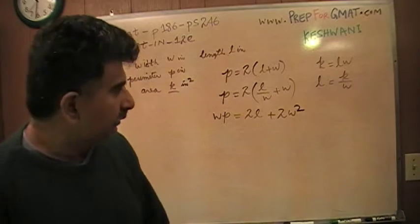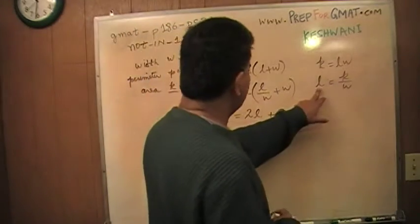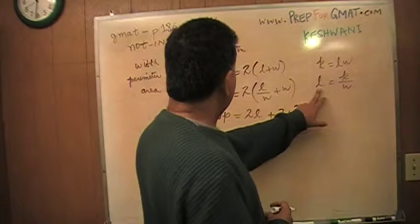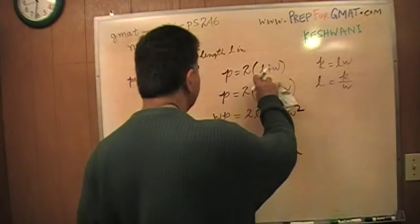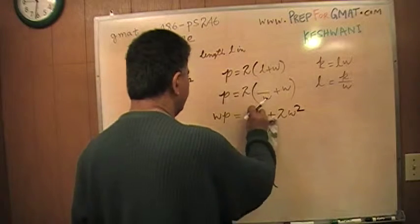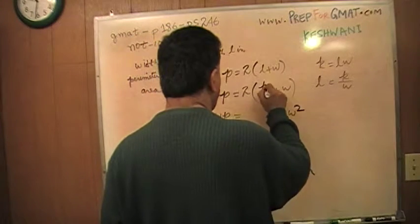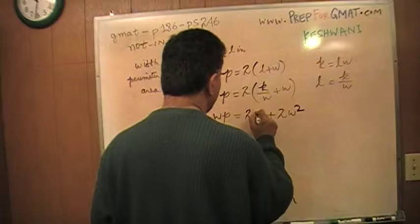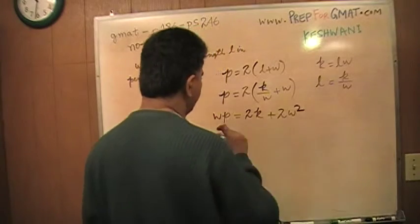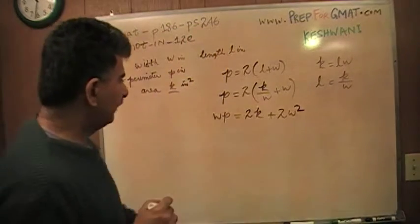I think I made a mistake. L, I solve for L, L is K over W, this is K, this should be K, K over W, and this should be 2K. There you go, bring the WP to the other side, and I think we are done.